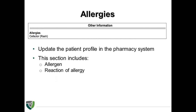The next section in the pharmacist's discharge handoff communication template after the patient's discharge medication list includes the allergy section. This section lists any allergies or intolerances that the patient disclosed upon admission or that were experienced throughout their hospitalization. It includes the specific allergen and the type of reaction to the allergen. The community pharmacy should use this information to update allergy information within the patient's prescription profile in the pharmacy system, which will help identify potential allergies and intolerances associated with the patient's medication.